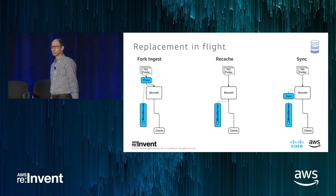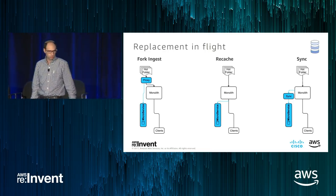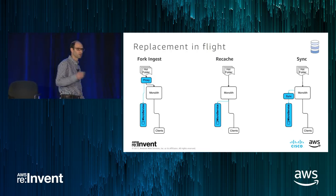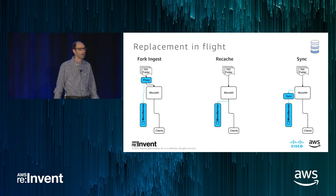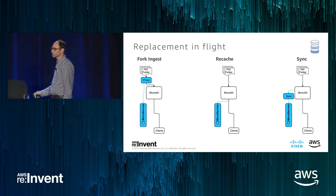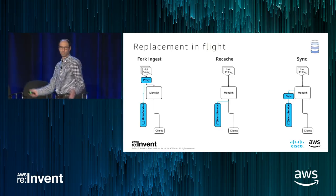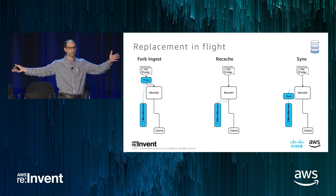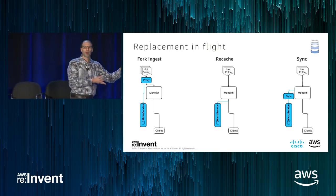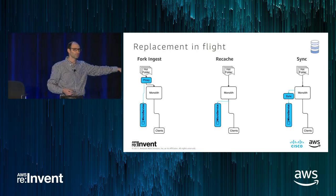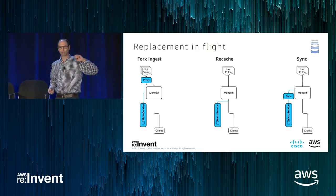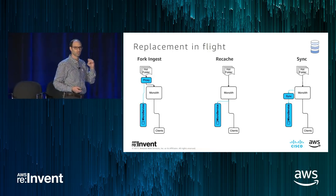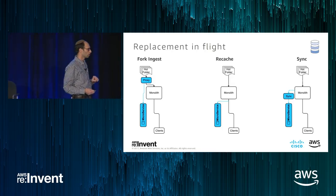We replaced our entire system with zero downtime to customers. We faced the challenge of how to build up data in new microservices while it's still sitting within the monoliths. We used three major patterns. The first and simplest is the fork ingest: a file being ingested into the monolith is forked and also supplied to the microservice. The microservice gets populated with data before clients are even talking to it, giving developers the ability to ensure proper ingestion and even do load testing on microservices in live production before shifting clients over.